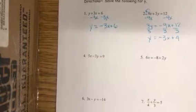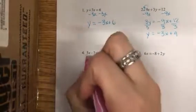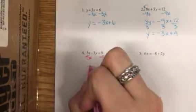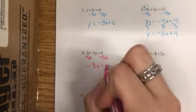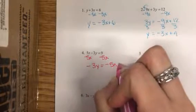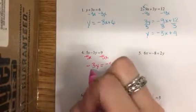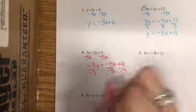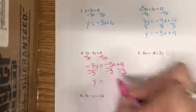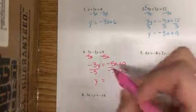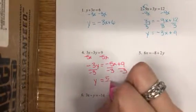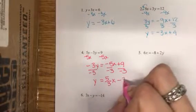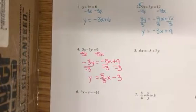Number four: we'll move a positive 5x by subtracting 5x, and then we'll undo multiplication with division in all three places. The five-thirds we can't reduce, but the two negatives do turn into a positive, and then a positive divided by a negative is a negative, so we'll get five-thirds x minus 3.